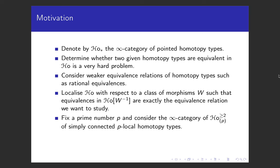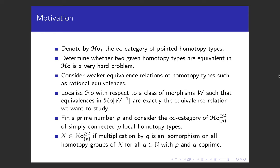For the localizations we will consider today, fix a prime number P from now on, and consider the infinity category of simply connected P-local homotopy types. Recall that a homotopy type is P-local if multiplication by Q is an isomorphism on all of its homotopy groups for every natural number Q that is coprime to P.